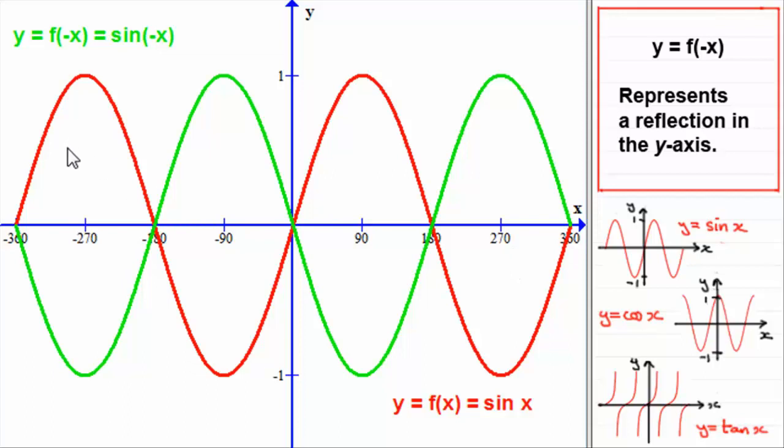But we have reflected it in the y-axis. Take this point, for instance, on y equals sin x at minus 271. You can see that it's gone over to here at 271. Take a point like this at 180, 0. It's actually gone to minus 180, 0. And you can look at that for all the other points. And hopefully you can see that the red graph has been reflected in the y-axis.